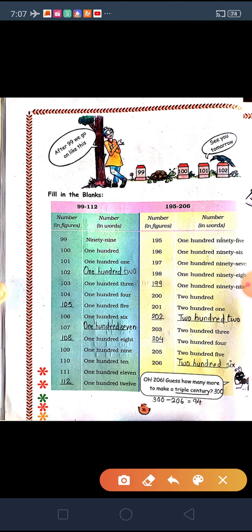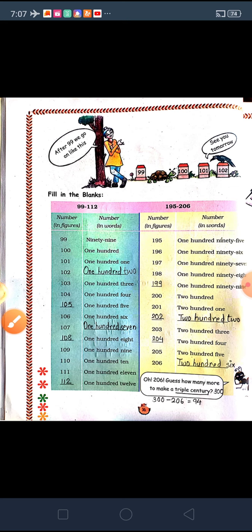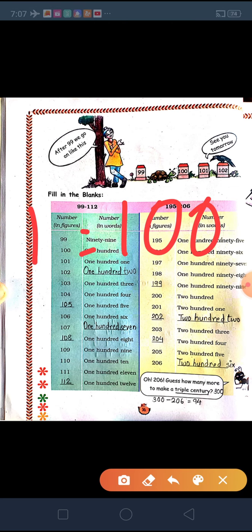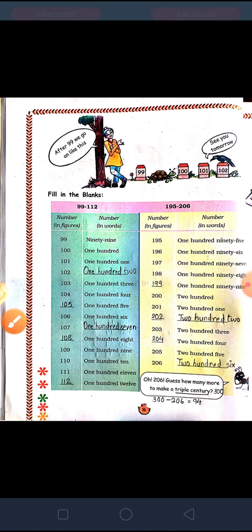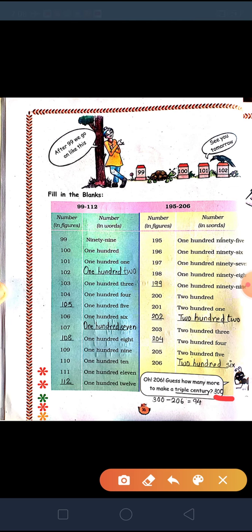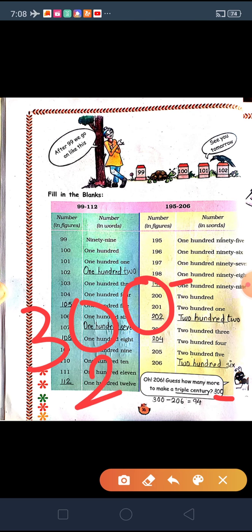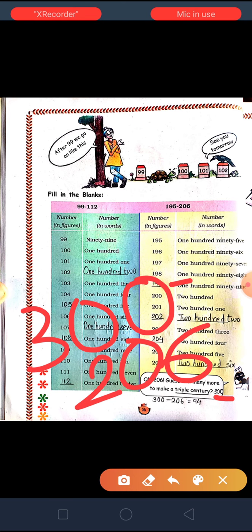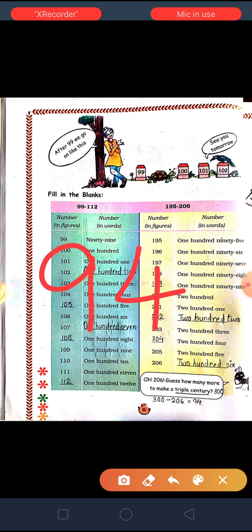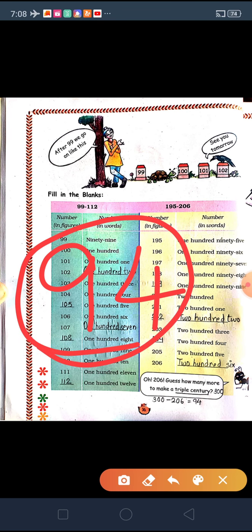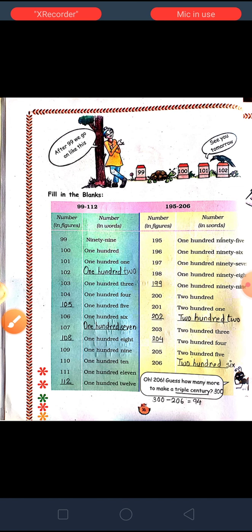Next, as you can see in this box: 206 — guess how many runs are needed to make a triple century. For 1 century we need 100 runs, for 2 centuries we need 200 runs, and for 3 — triple century — we will need 300 runs. Triple means 300. We already have 206, so subtract 206 from 300, you will get 94. So 94 more runs are needed to make a triple century.